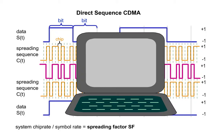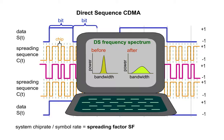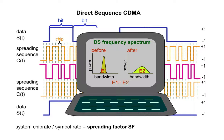The DS frequency spectrum also shows another characteristic feature. The size of the area below the multiplied signal, which corresponds to the energy of the signal, must not change. Therefore, the energy of the original signal must spread over a larger frequency range.